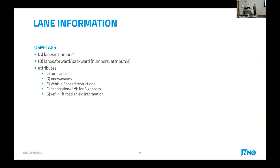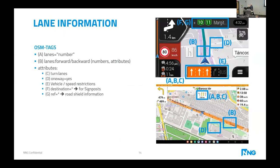Regarding lane information, it's ideal to have it for the complete road network, but it's especially important for complex junctions. If we fill up the lane data properly — the textual information, the lanes, the road sheds that are available — it greatly aids the guidance of drivers.